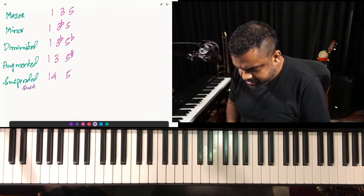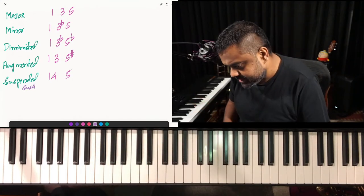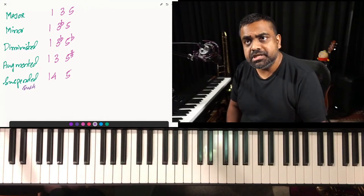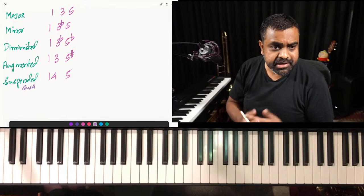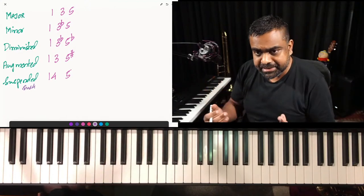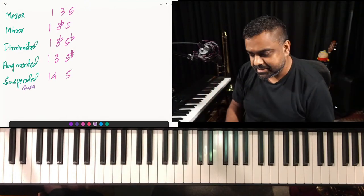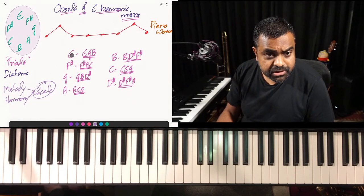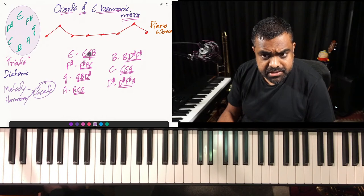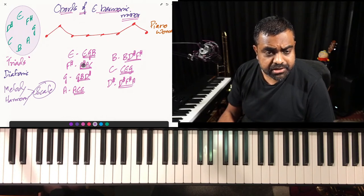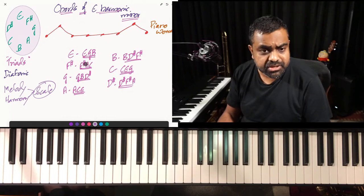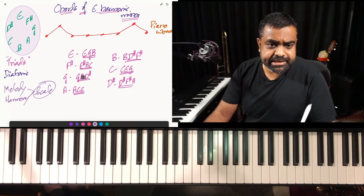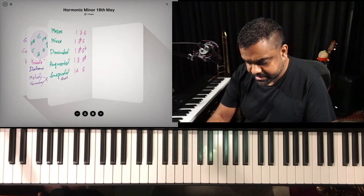Moving forward, on the harmonic minor scale some chords will be major, some minor, some diminished, some augmented. We have to assess these chords and figure out what they're called. I'm going to break that down for you now. In a harmonic minor scale, you'll have minor chords, diminished chords, major chords, and augmented chords.